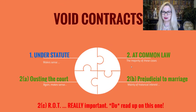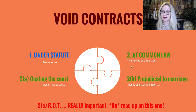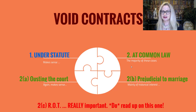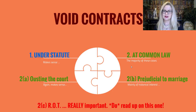Much like our discussions in previous videos in this series, contracts might be rendered void either by statute or at common law. Contracts rendered void at common law fall into one of three different categories: firstly, contracts that purport to oust the jurisdiction of the court; secondly, contracts that are prejudicial to marriage; and thirdly, restraints of trade. Those are really important and you certainly need to do your readings on those.